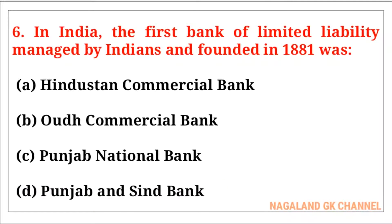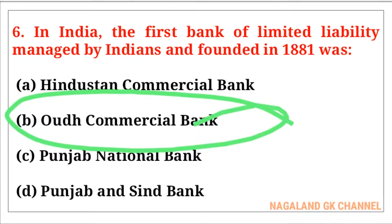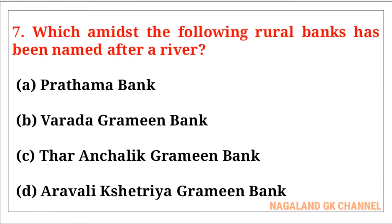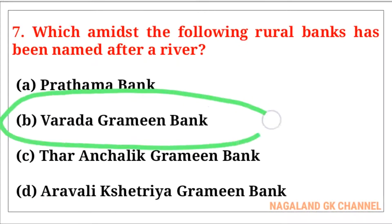Question number six: In India, the first bank of limited liability managed by Indians and founded in 1881 was — the correct answer is the Oudh Commercial Bank. Question number seven: Which of the following rural banks has been named after a river? The correct answer is option number B, that is Varada Grameen Bank.